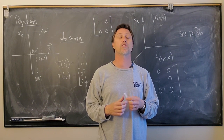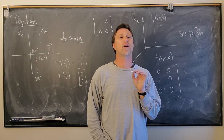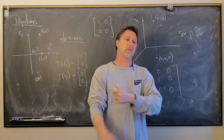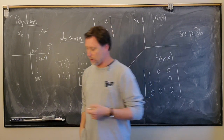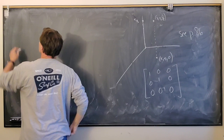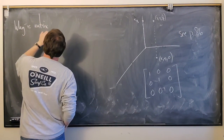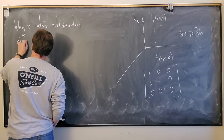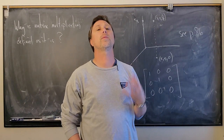Now that we've established this connection, I want to ask and answer the following question. If you think back to how we defined matrix multiplication, it's a bizarre definition — who would have ever come up with such a weird way to multiply matrices? There are much easier formulas that would make sense for multiplying matrices. So here's the question: why is matrix multiplication defined as it is? Who cooked up this bizarre way to multiply matrices and why?